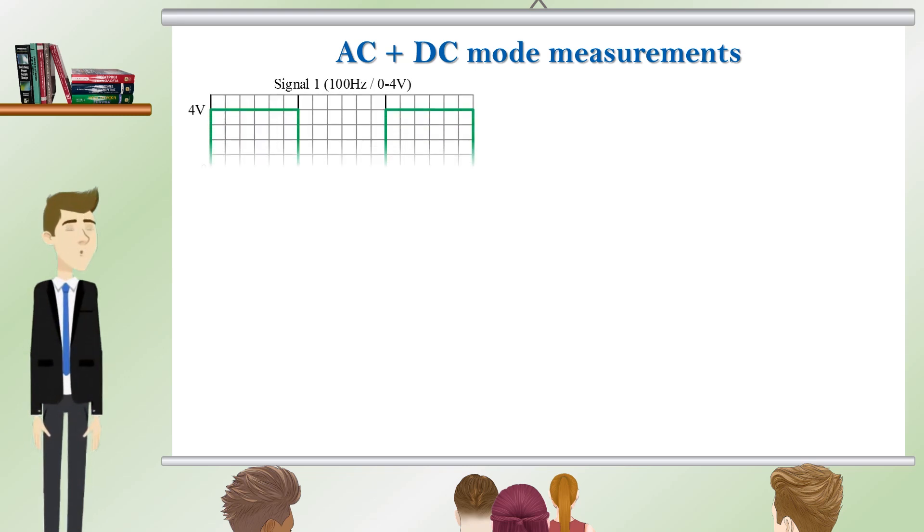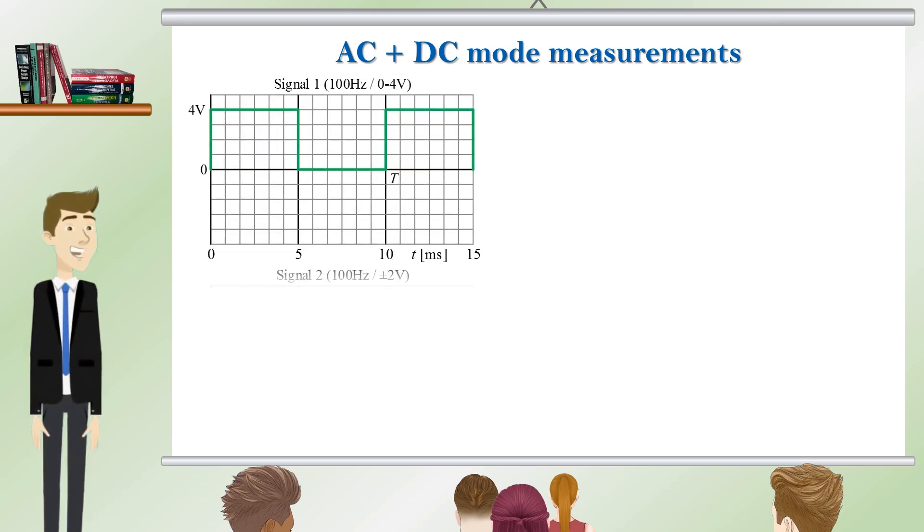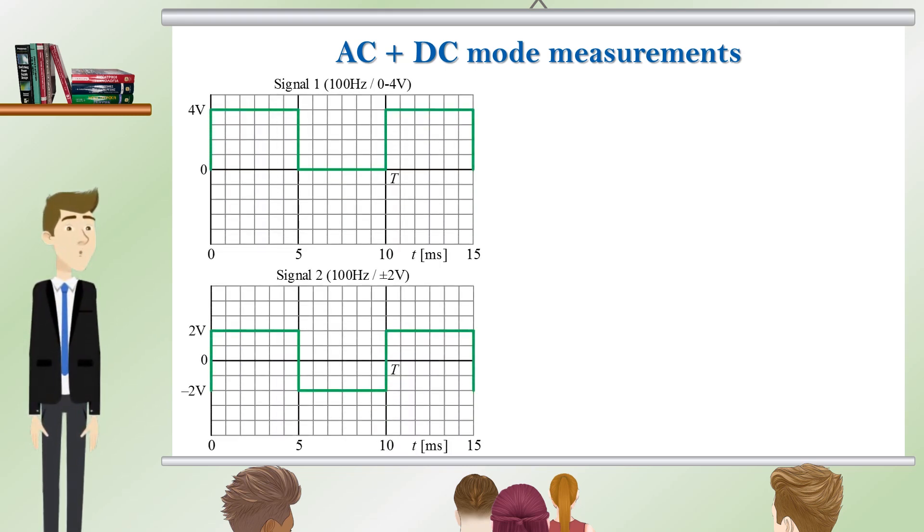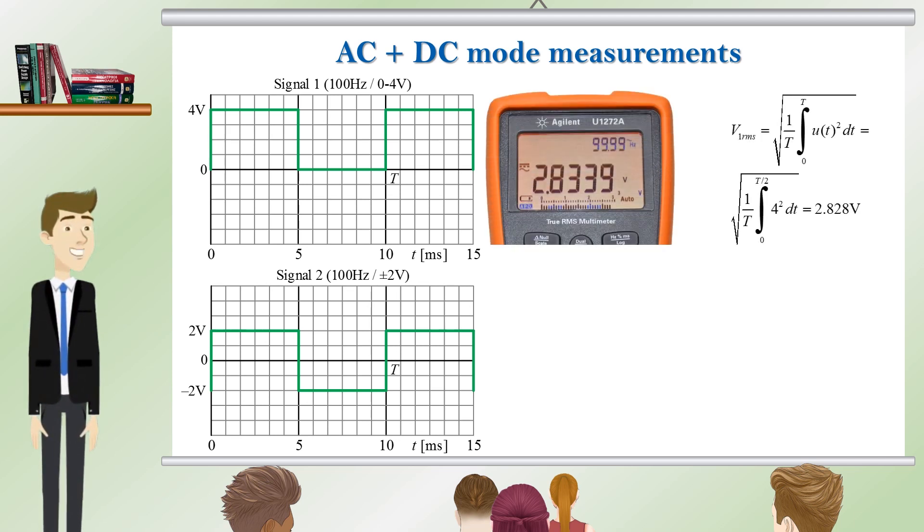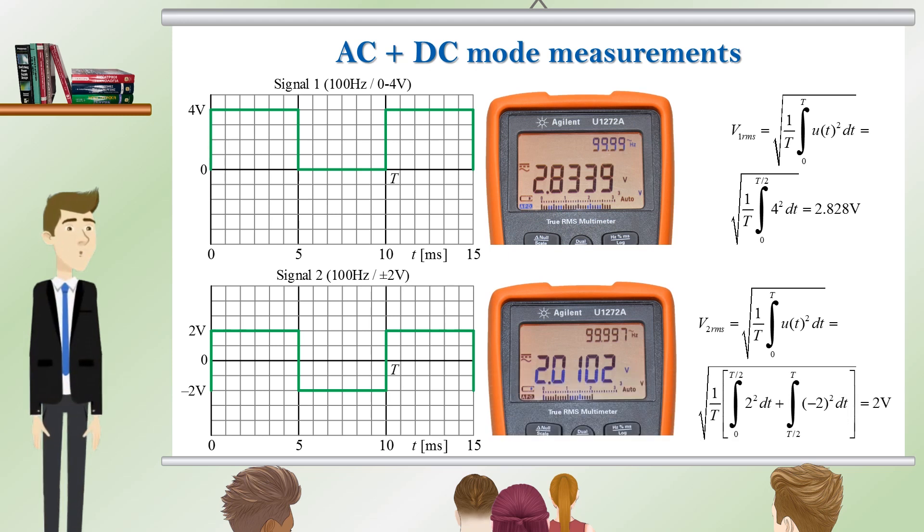In AC and DC mode the multimeter measures the RMS value of the applied signal. The RMS value of signal 1 is calculated. The RMS value of signal 2 is calculated.